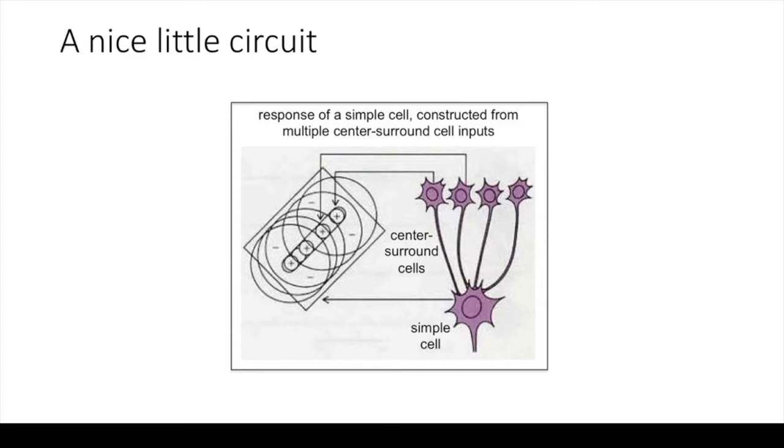If you show a straight line to a given part of the visual field, this will activate a group of center surround cells, first in the retina, then in the thalamus, which are at the appropriate angles to each other, and their collective activation will in its turn activate the simple cell of the relevant orientation.